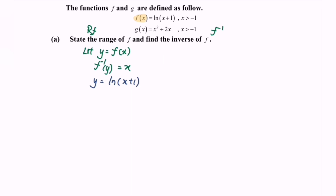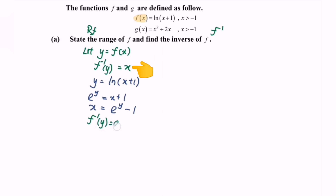Now rearrange the equation. In this form, we consider it as log form, so we convert it to index form. We get e to the power of y is equal to x plus 1, so x is equal to e to the power of y minus 1. Since x equals f inverse of y, we have f inverse of y equals e to the power of y minus 1. Rewriting: f inverse of x is equal to e to the power of x minus 1.